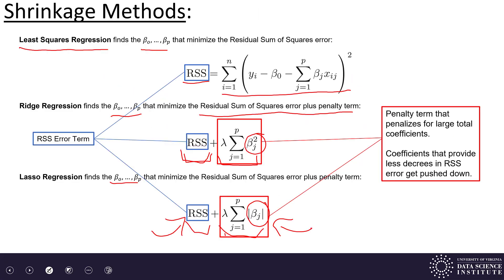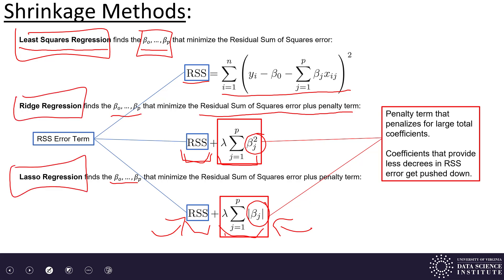One more comment: when doing least squares regression, you can solve for the coefficients explicitly. When doing ridge or LASSO regression, you can't find these coefficients explicitly in general — an iterative search is required. The lambda values control how much we weight the size of the coefficients. When lambda is large, coefficient size becomes very important and dominates over fit. When lambda is small, coefficient size matters less and the model tries to get a good fit measured by residual sum of squares. When lambda is 0, we recover normal least squares regression.